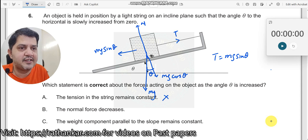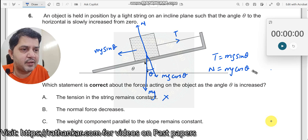So option A is incorrect. The tension does not remain constant. Option B says the normal force decreases. Let us look at normal force. N is equal to mg cos theta. So when theta increases, what will happen to cos theta? Cos theta will start reducing, start decreasing. When this is decreasing, that means mg is constant, so N should also decrease.